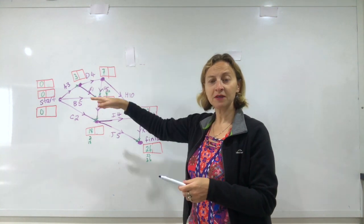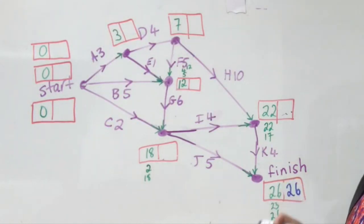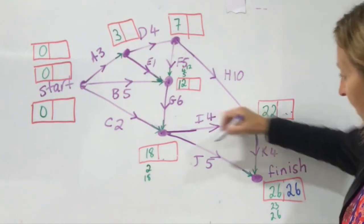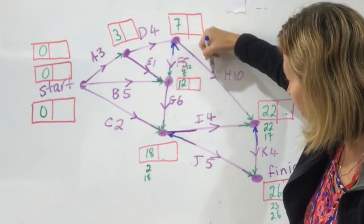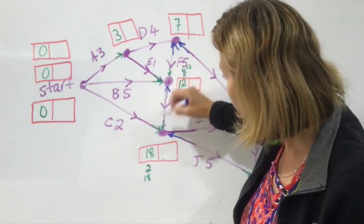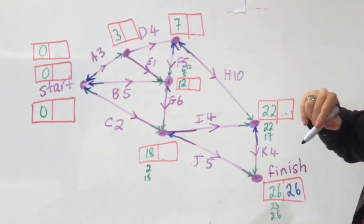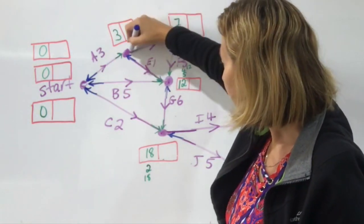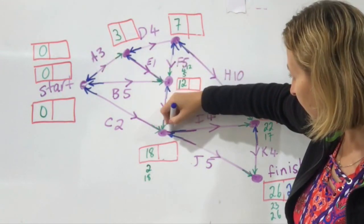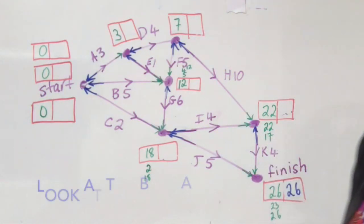Now let's do backward scanning, going from right to left. We're looking for the smallest number going into each vertex. Remember, at the finish we start at the same value as our earliest starting time, which was 26. We go in the opposite direction of the arrows. I like to use a different color to attract attention. If I've missed one, I'll realize when doing it that something's missing and fill it in, because there's a lot of information.